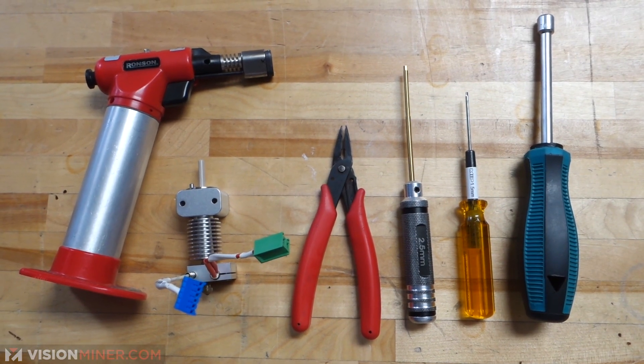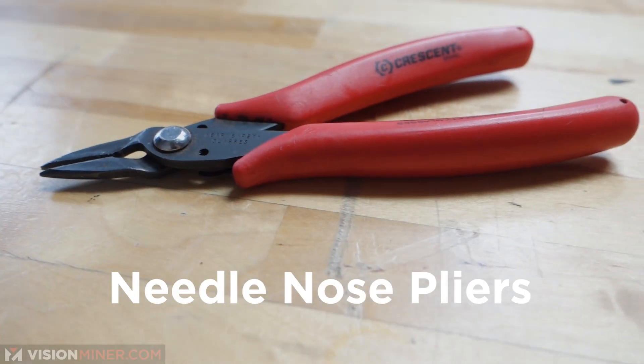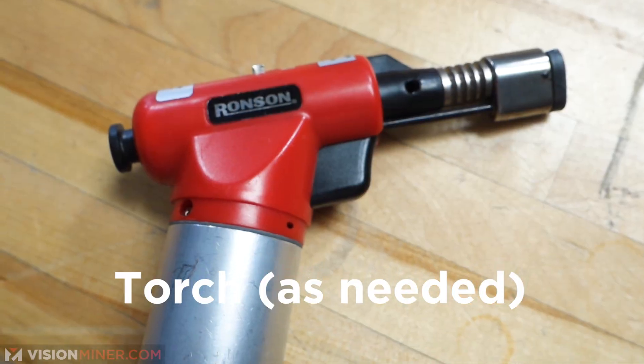So let's get right onto it. For tools, you are going to need just a 7mm nut driver, a needle nose plier, 2.5mm hex driver, 1.5mm hex driver, and also a torch.